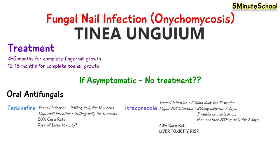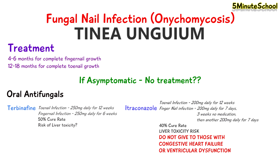Itraconazole is another oral antifungal. For toenail infections, 200 milligrams daily for 12 weeks is often prescribed. For fingernail infections, the protocol is done in two stages: 200 milligrams daily for seven days, then stopped for three weeks, followed by another seven days of 200 milligrams daily. Itraconazole has a 40% cure rate and should not be given to those with ventricular dysfunction or heart-related issues like congestive heart failure. There is also a risk of liver toxicity.